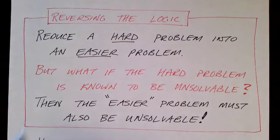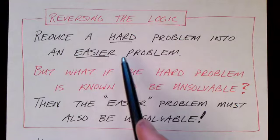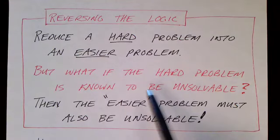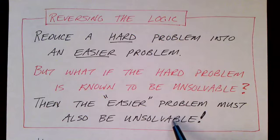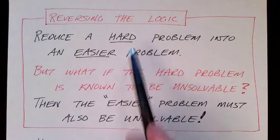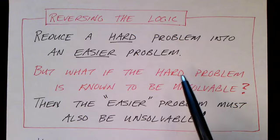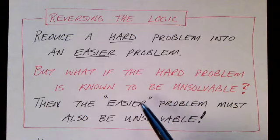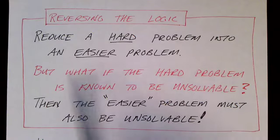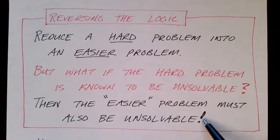Now let's reverse the logic and show how we can use this technique of reduction to prove that some problems are unsolvable. We can reduce a hard problem into an easier problem, but what if the hard problem is known to be unsolvable? Then the easier problem must also be unsolvable. Because if we could solve the easy problem via the reduction, we know that we could solve the harder problem. But if we know the harder problem is itself unsolvable, then that implies there cannot be a solution to the easier problem. You can substitute 'decidable' here — if the hard problem is known to be undecidable, then we can conclude that the easier problem must also be undecidable.